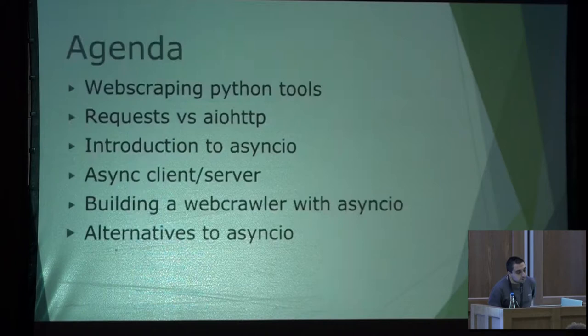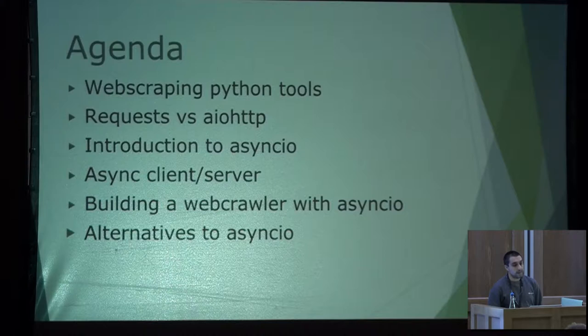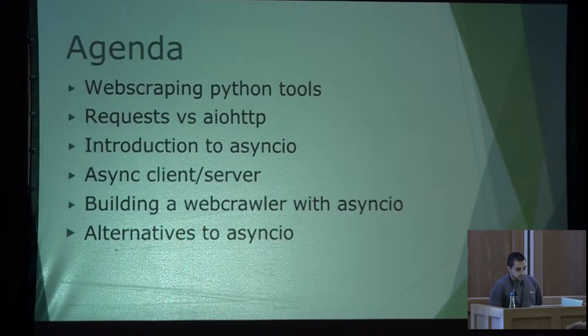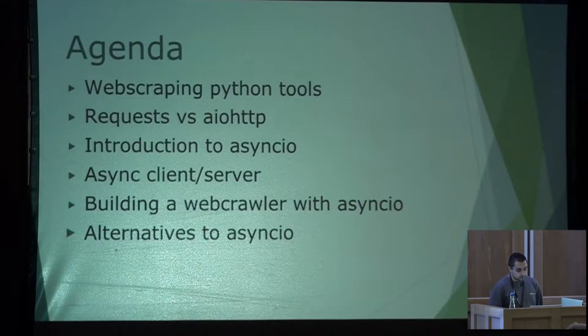The main points I will talk about: first, a little introduction to web scraping Python tools. Then I will compare the requests module versus AIOHTTP, which is another module for making requests that integrates better with AsyncIO. Then an introduction to AsyncIO and its main features, followed by how we can build our own client-server with AsyncIO, samples of web crawling, and finally alternatives to AsyncIO in Python.